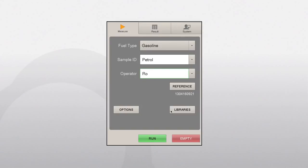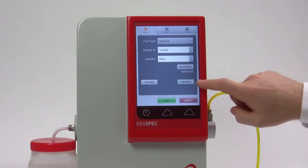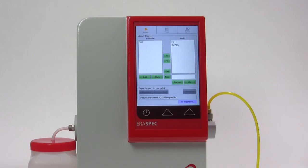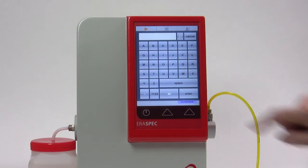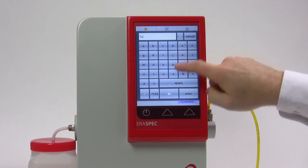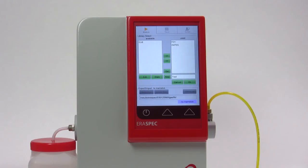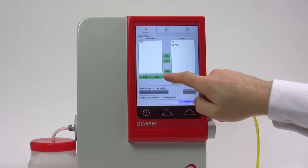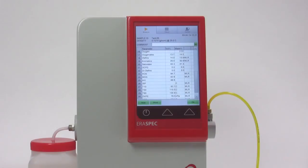For best accuracy, it is recommended to create new libraries with your specific samples or at least add typical samples to the existing libraries on the AeroSpec. Enter the name of the new library and press the button New. It is possible to add a sample directly after a measurement by pressing the Add button or at any time later from the result memory.